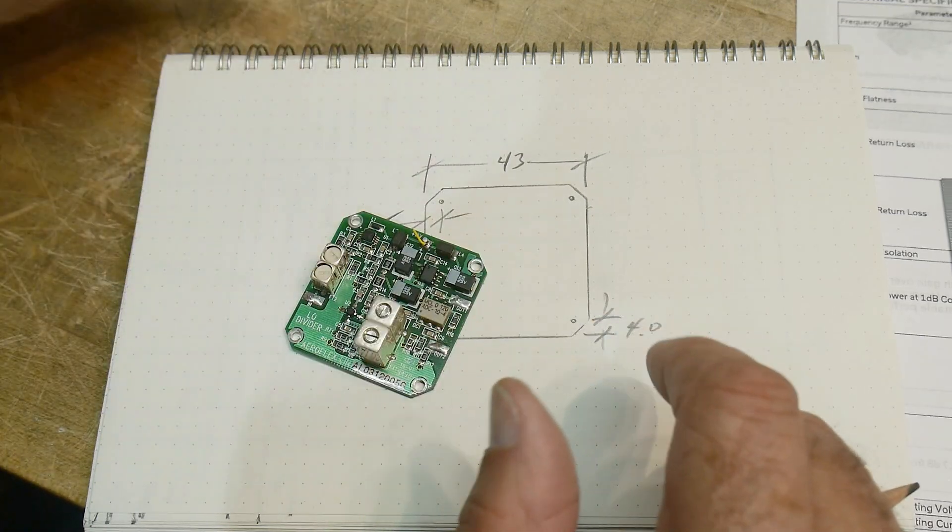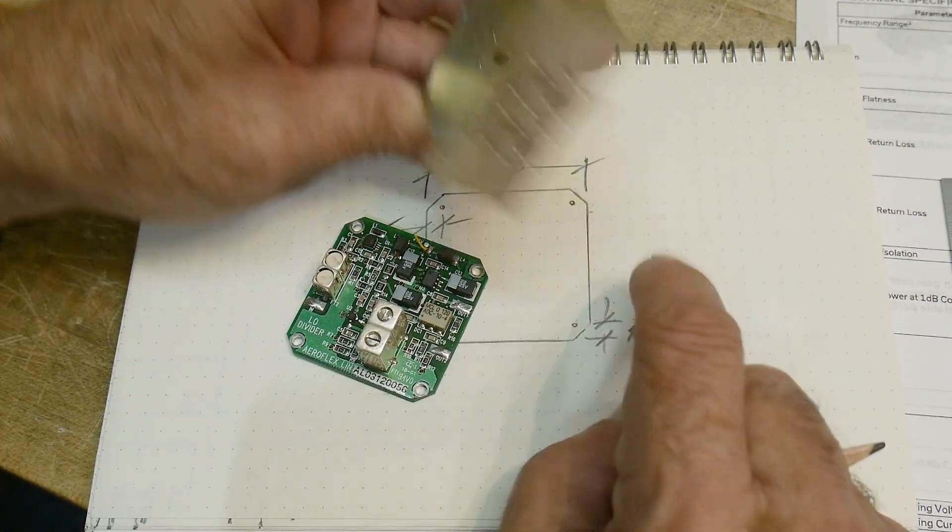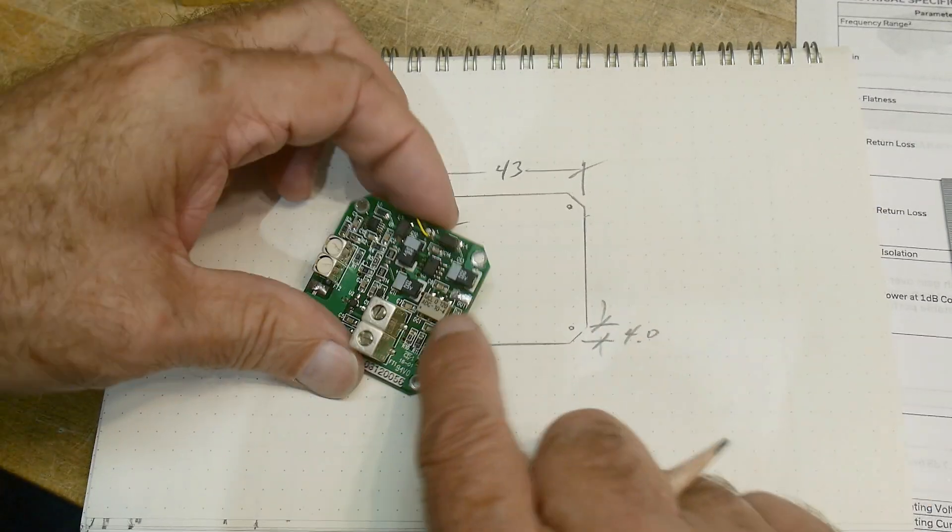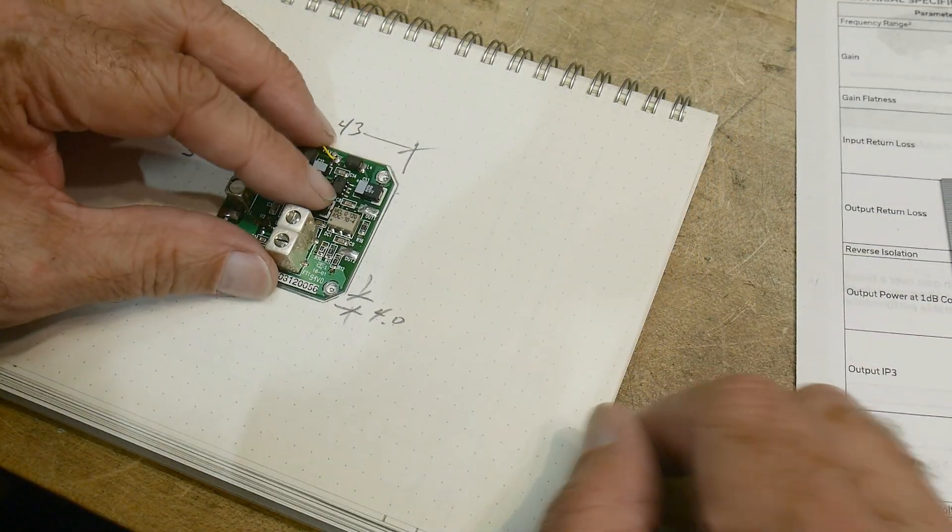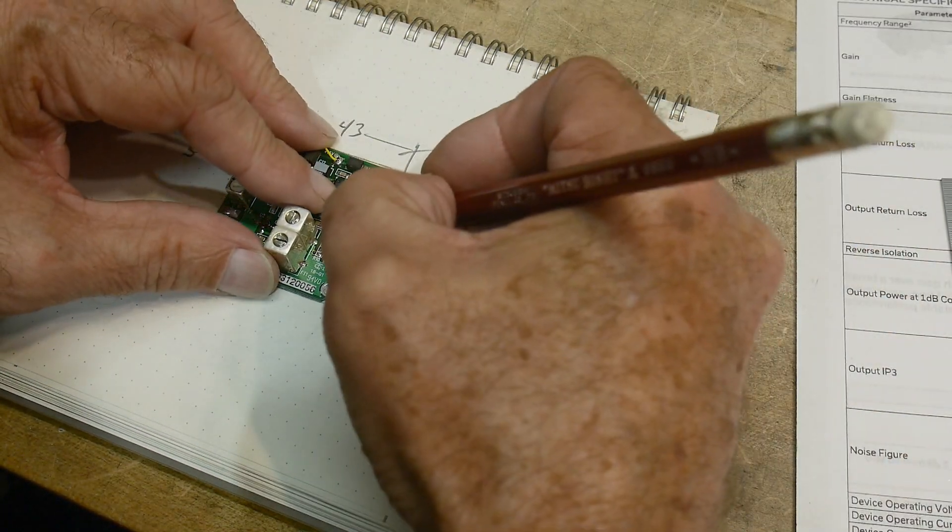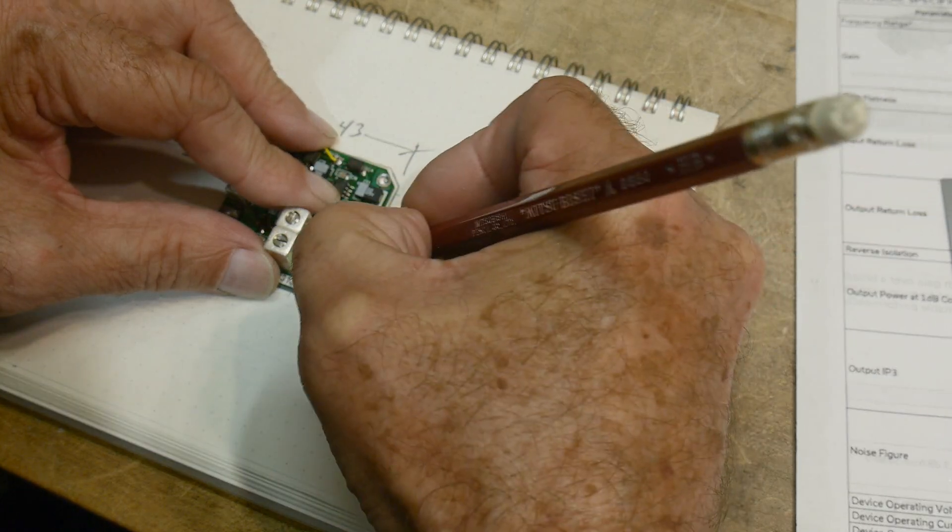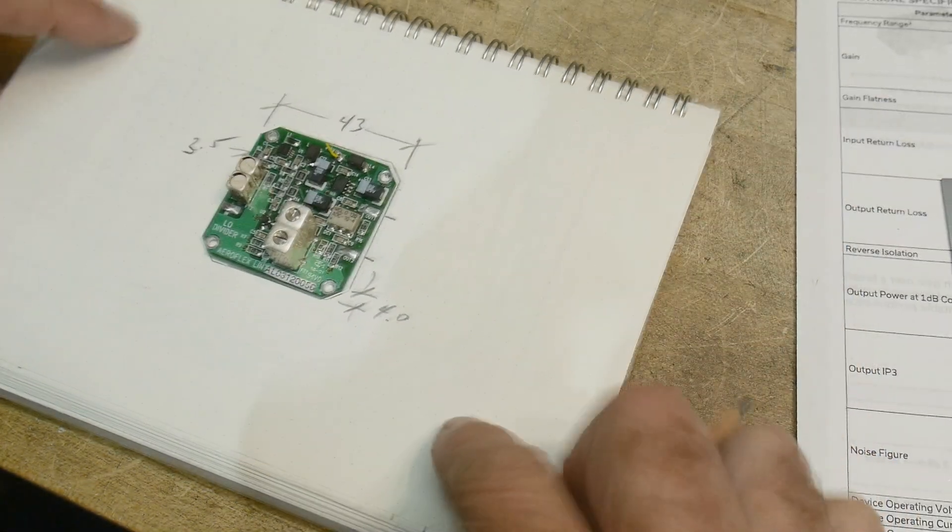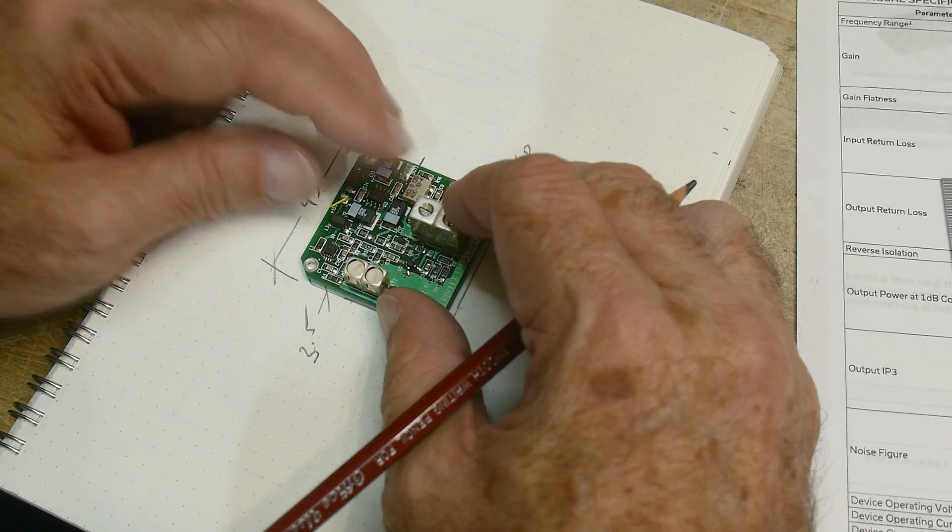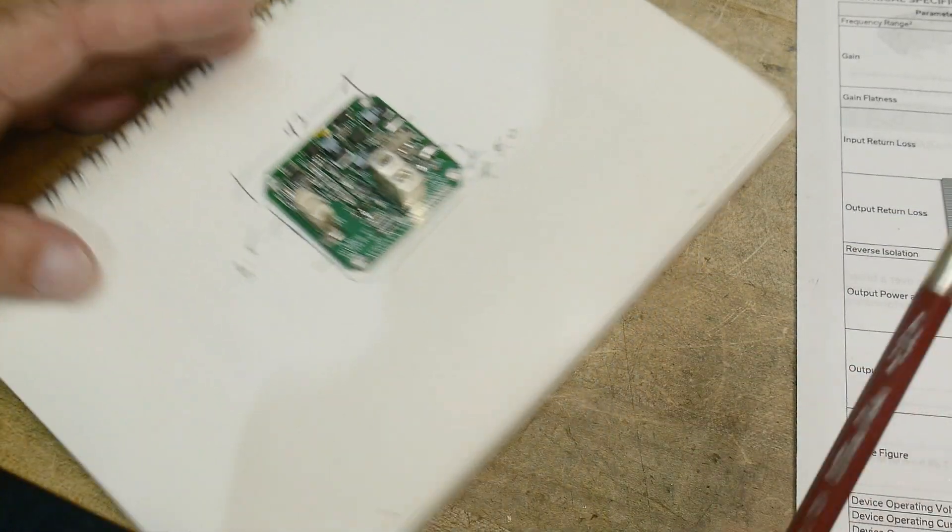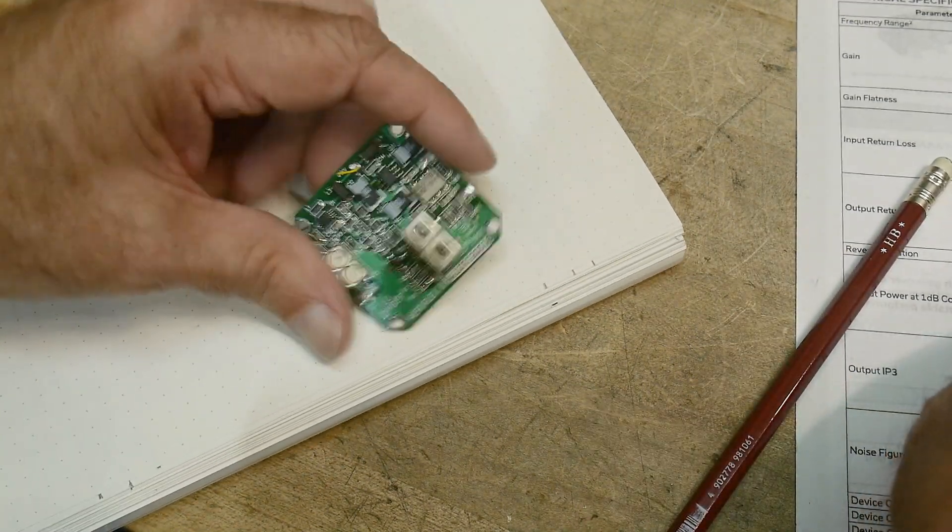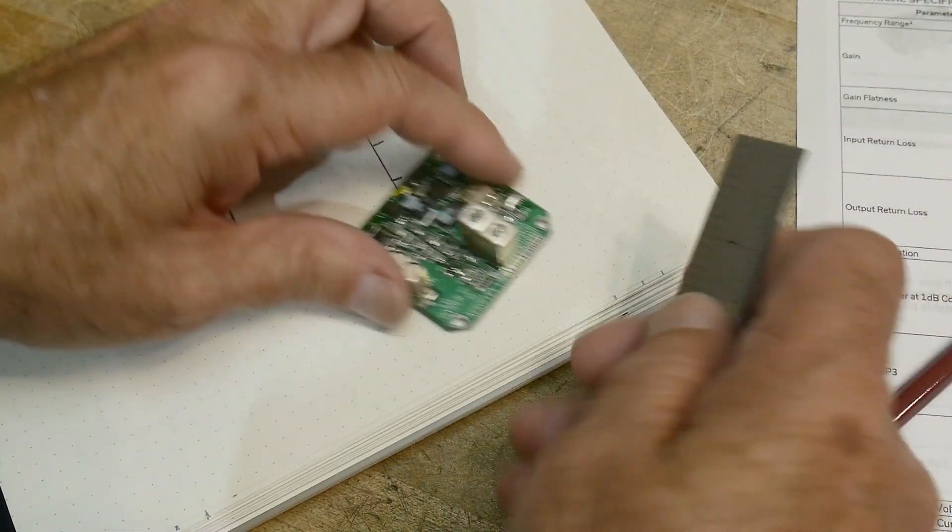We need to have the locations of the coax connectors, okay? Because we have to include those on our board. All right. So there is a connector here and a connector here, and there is a connector here. All right, let's see if we can get some mechanical dimensions off for those things.